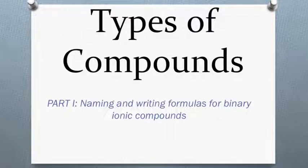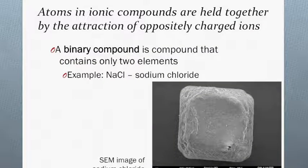Today we're going to learn how to name and write formulas for simple binary ionic compounds. In an ionic compound, the atoms form ions which are held together by the attraction of these oppositely charged ions.